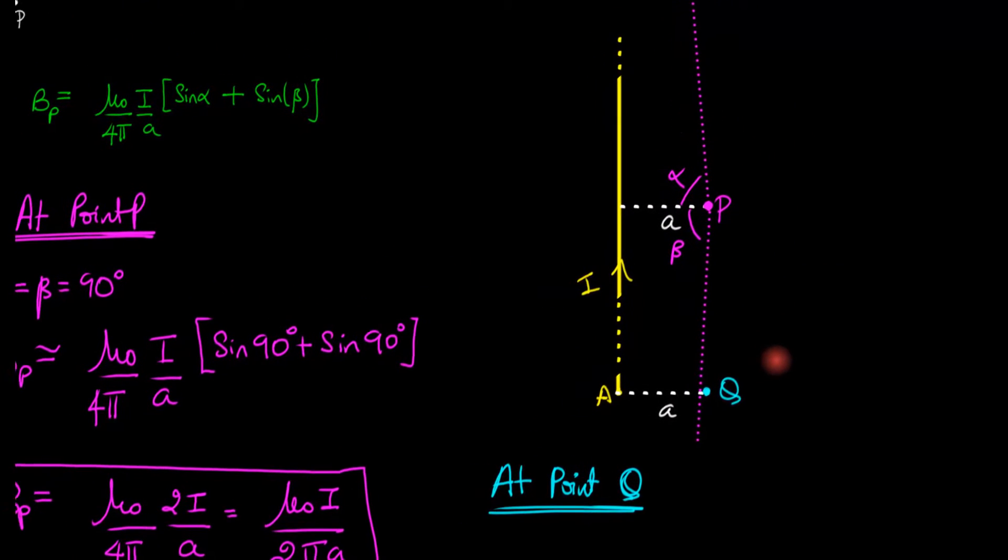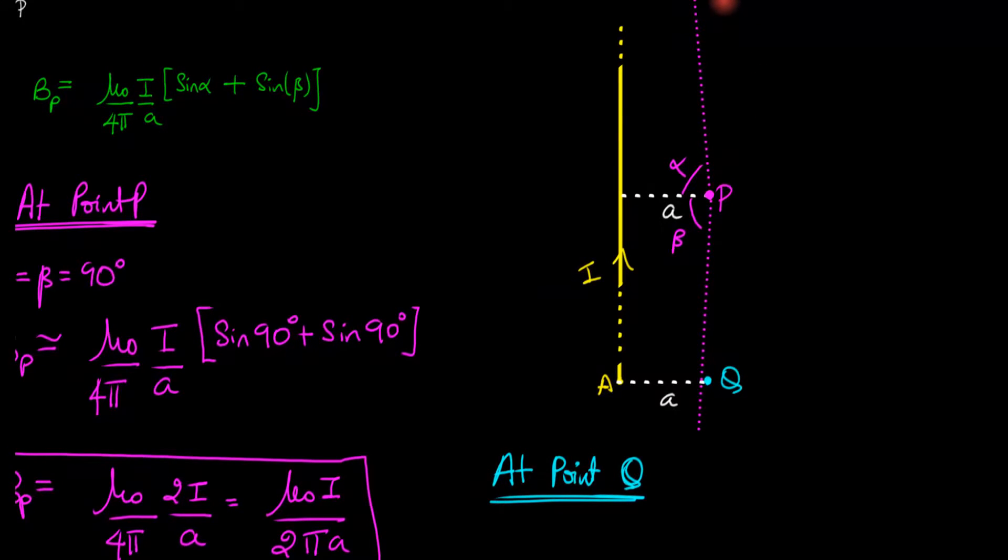If we do the same exercise for point Q - draw lines and calculate alpha and beta - then one line, just like what we did with point P, is going to go all the way over there somewhere. And that makes angle alpha 90 degrees.